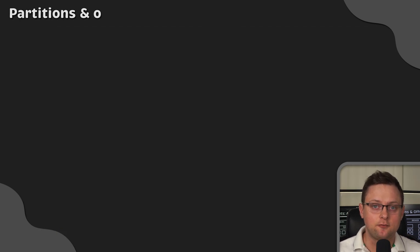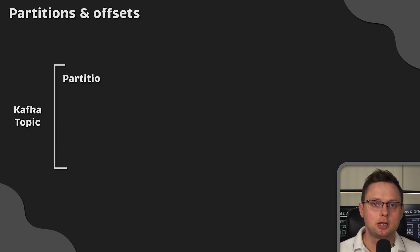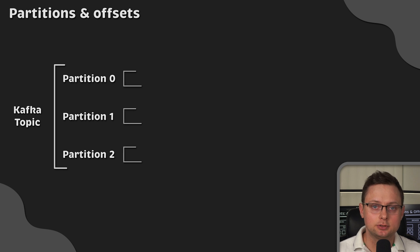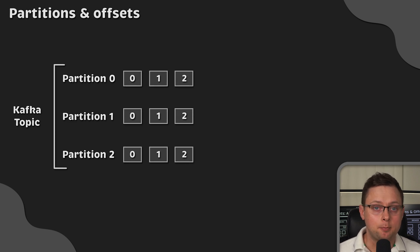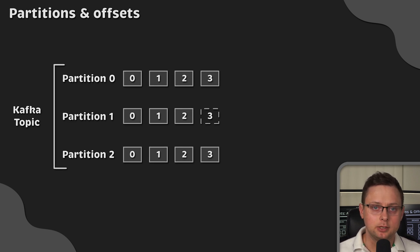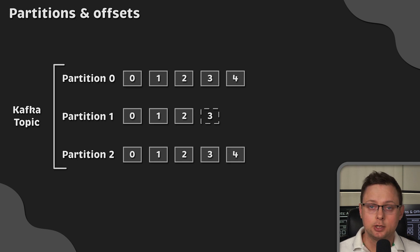The Kafka topic itself is divided into partitions. Each partition can be located on a different broker, which enables horizontal scaling of Kafka. Each topic can be made up of hundreds of partitions — more partitions means more parallelism and higher throughput you can achieve.